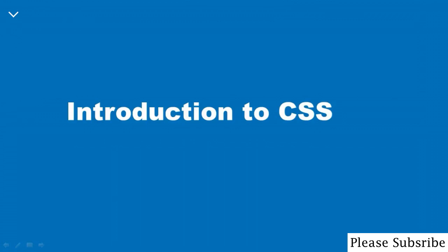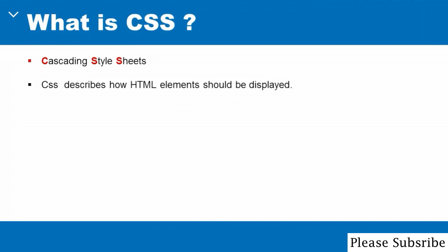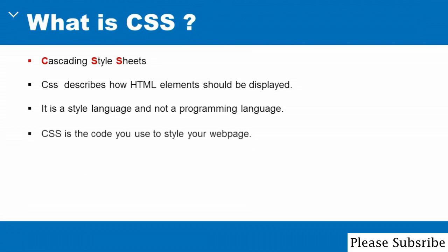I introduce you to CSS. I will also be explaining the CSS rule set — by rule set, I mean the syntax or the way the CSS structure is put together. CSS stands for cascading style sheets. CSS describes how HTML elements should be displayed. CSS is what is referred to as a style language and not a programming language. CSS is the code you use to style your webpage. Just like a stylist can style your hair, you can use CSS to style HTML elements.